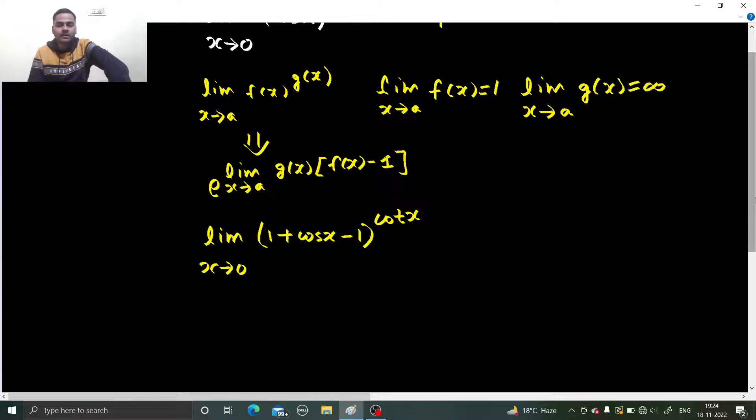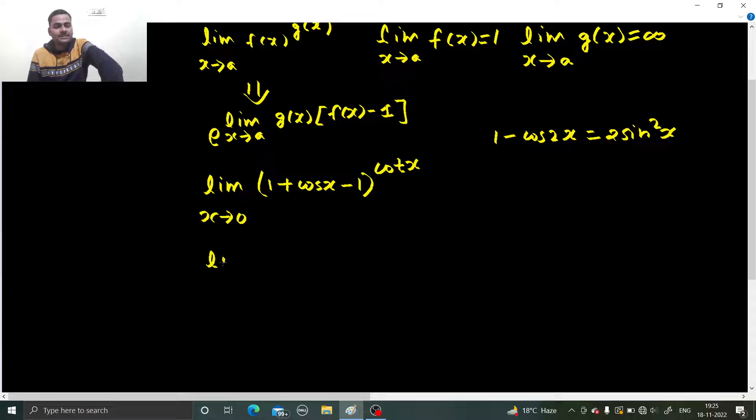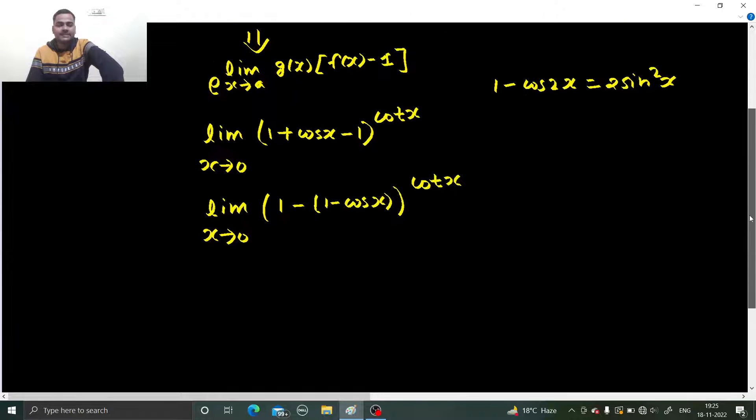Now, we don't have a formula for cos x minus 1, but we do have a formula for 1 minus cos x and that is 2 sin square x by 2. So let's create scenario like that also. So limit x tending to 0, 1, take a minus common and you get 1 minus cos x, and this raised to power cot x. Now the stage is set.